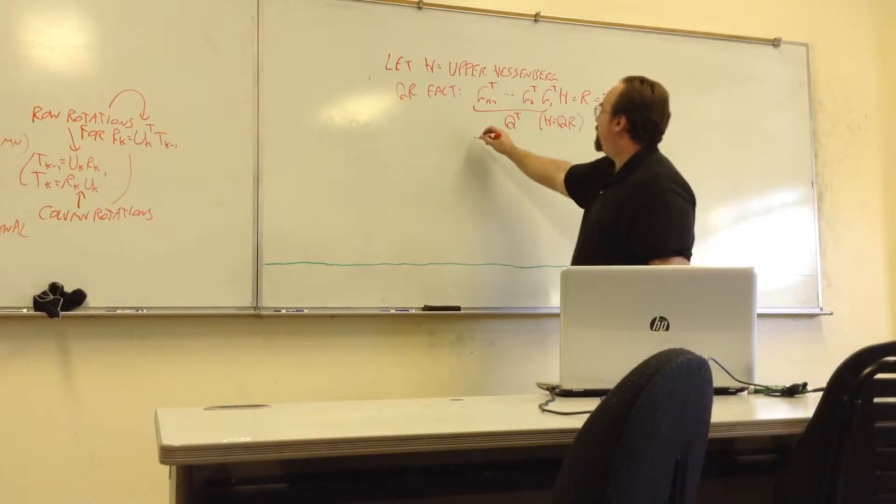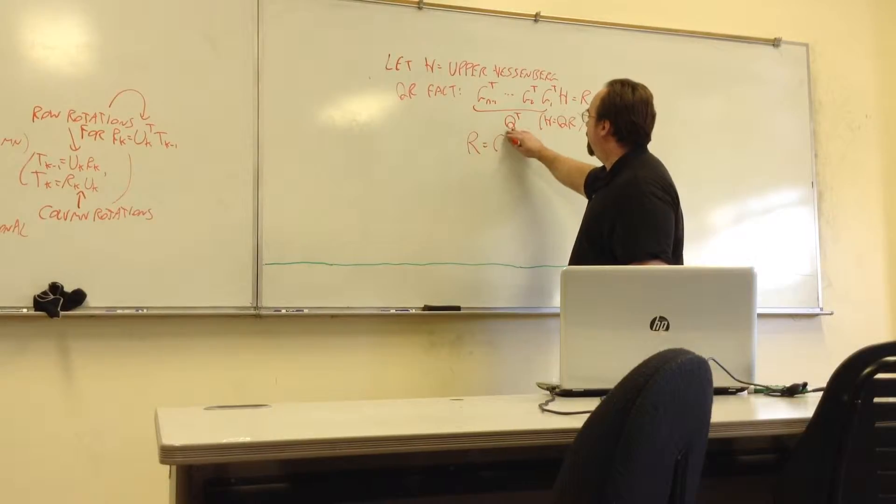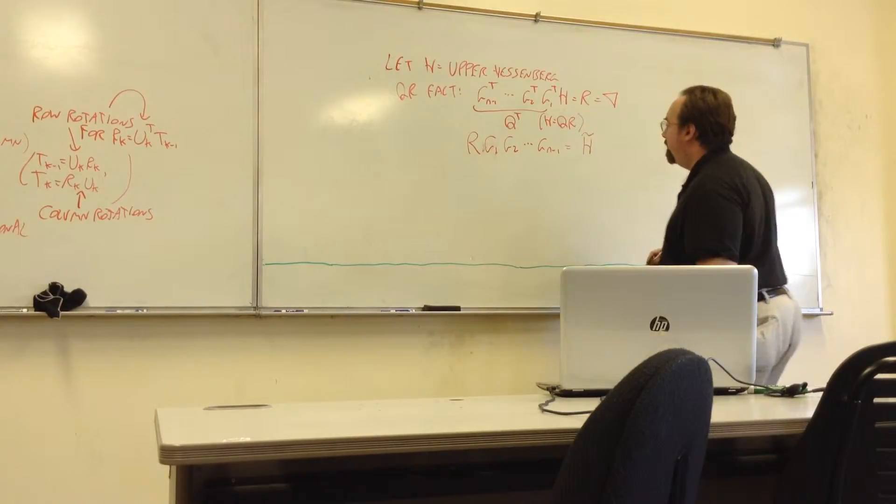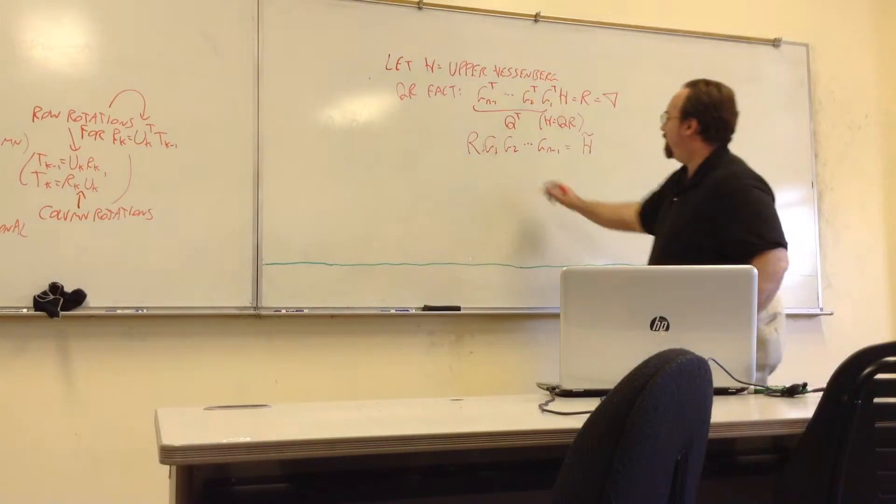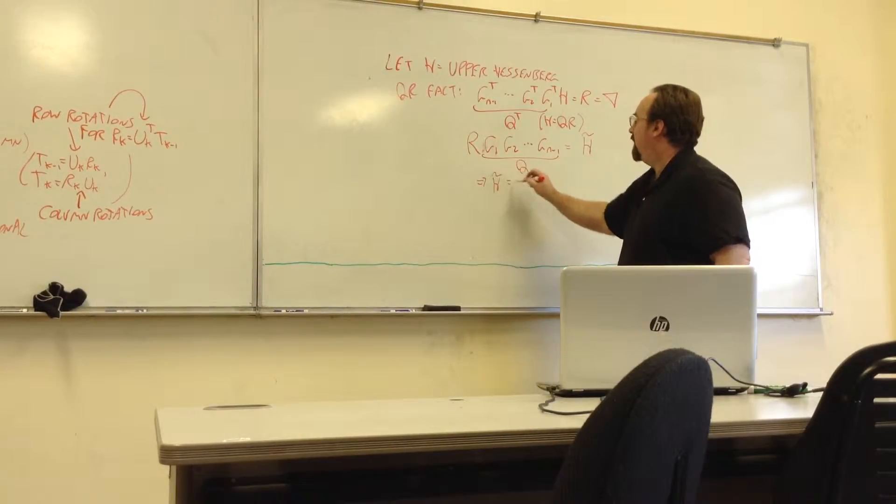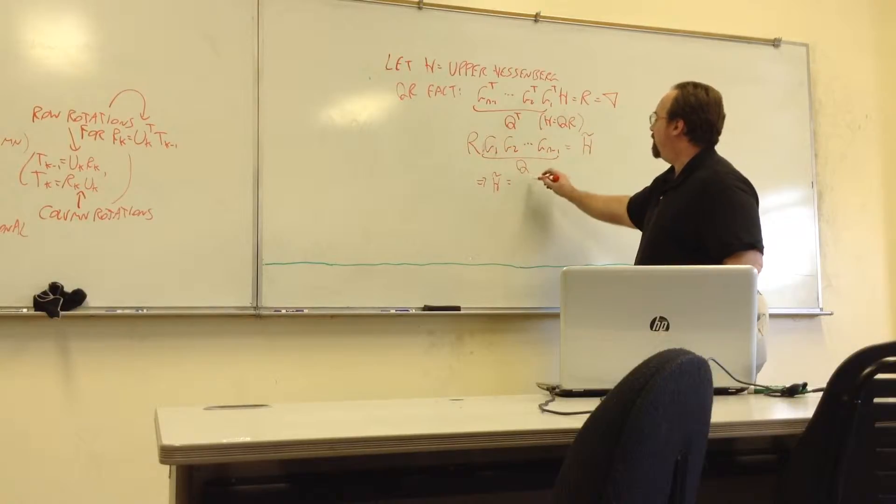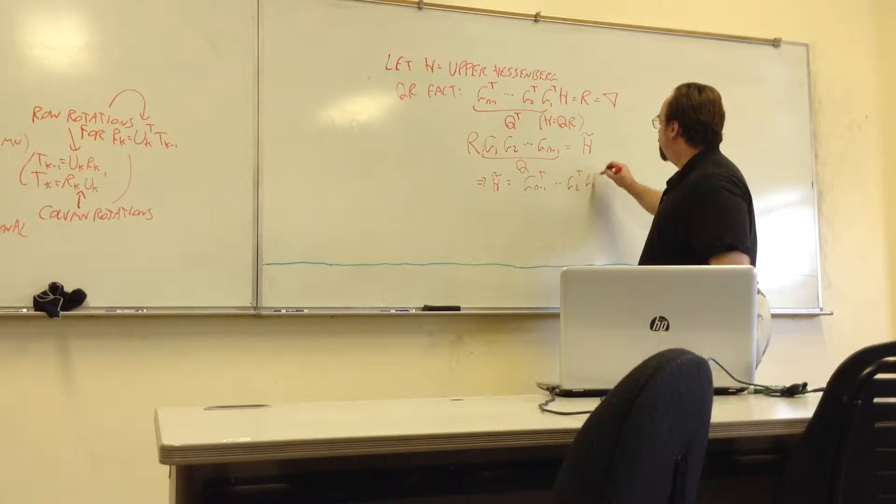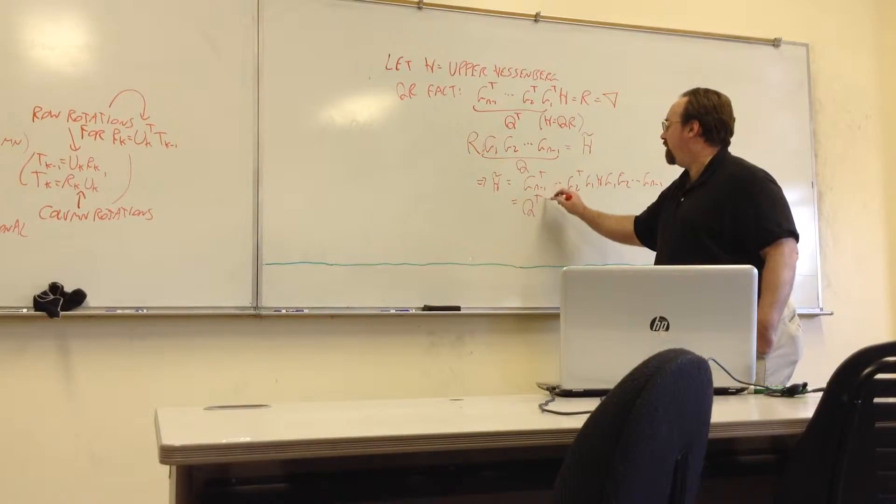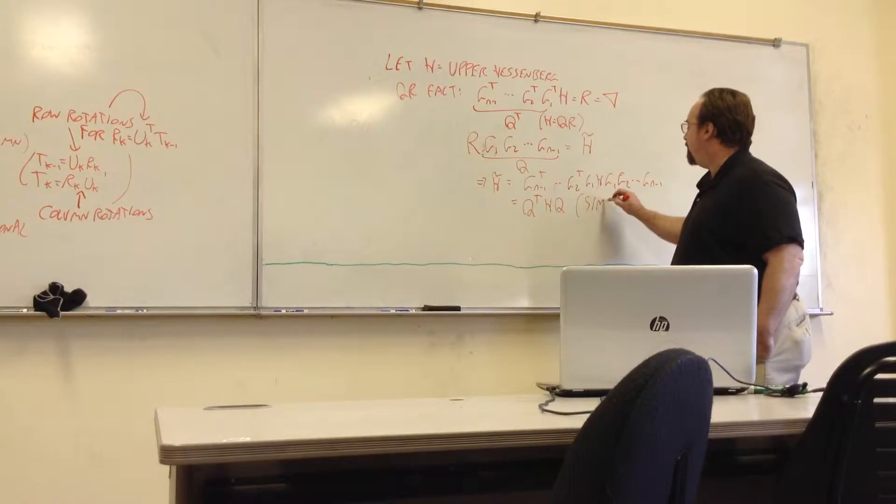And then we take R and apply those same rotations on the right as column rotations in this order, and that gives us a new matrix H tilde. So if we put all this, so this is Q right here, so H tilde is R, but R is equal to all this. So we have GN minus 1 transpose G2 transpose G1H, G1, G2, up to GN minus 1. But that's the same as Q transpose HQ. So that is a similarity transformation.